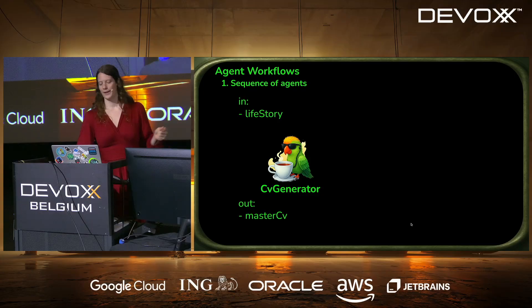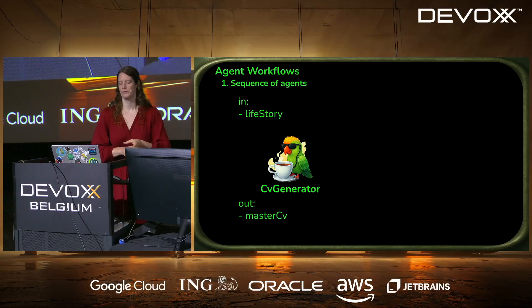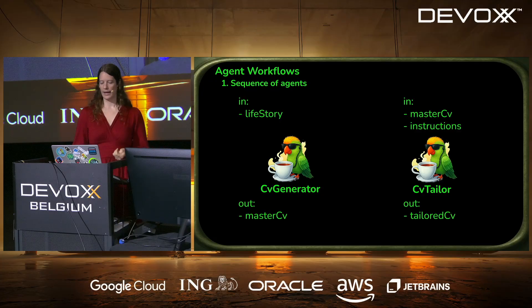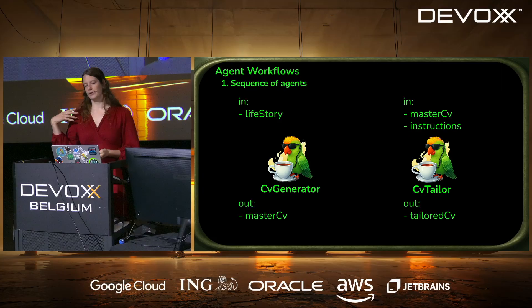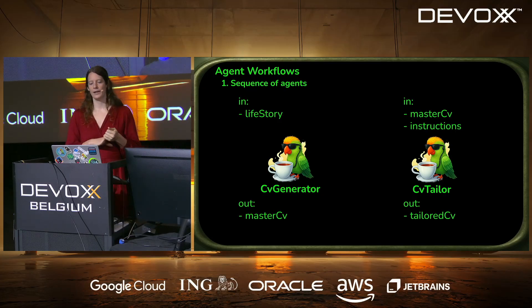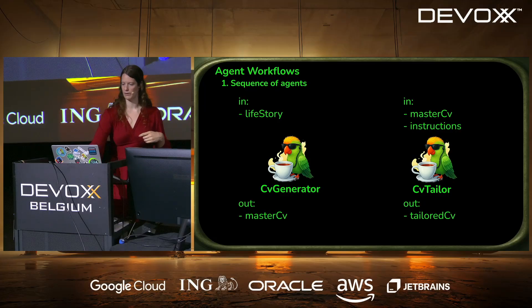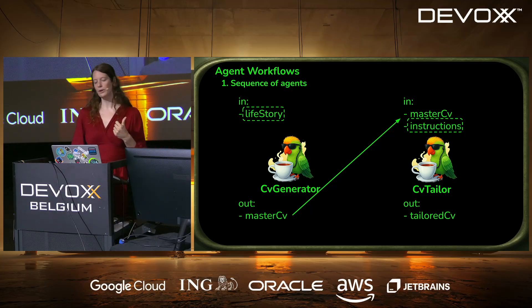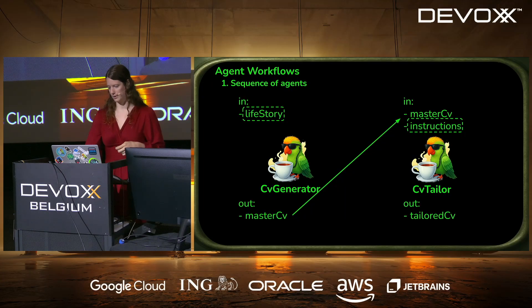Here's an example that helps you write your CV, which in AI times may be useful. We have a CV generator that takes in your life story and produces a master CV with everything you've done. Afterwards, a CV tailor takes that master CV and tailors it to specific instructions or a job description. If you want to design agentic systems, I recommend you actually draw them out — see what are the real inputs, real outputs, and intermediary values. For example, the master CV coming out of agent one is an input variable for agent two. Life story and instructions are real inputs passed from the start, and the output is the tailored CV.